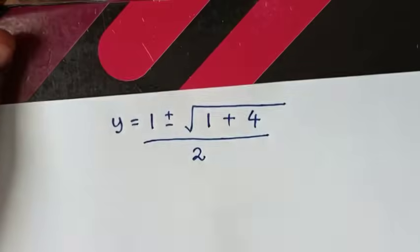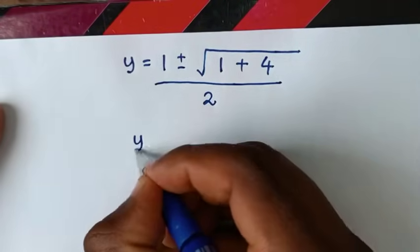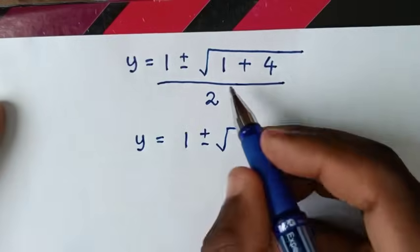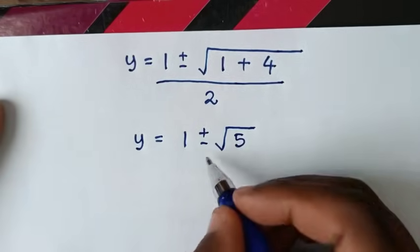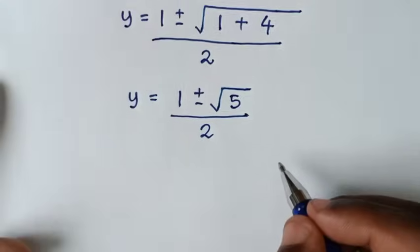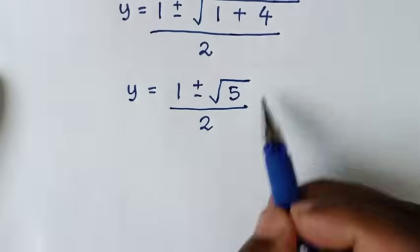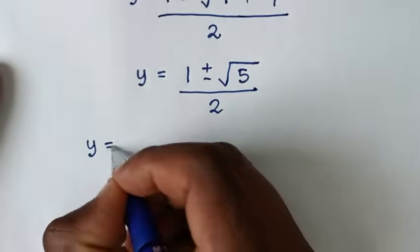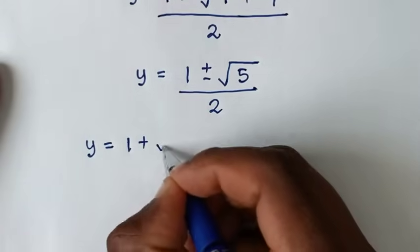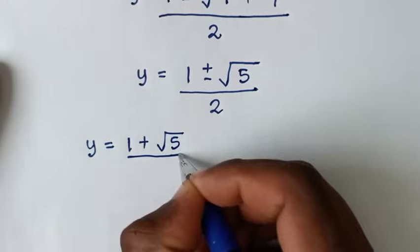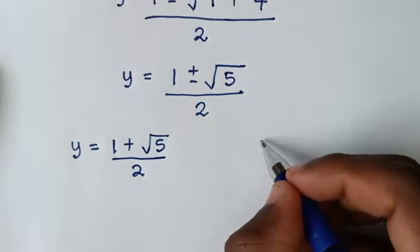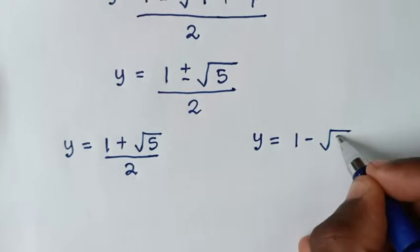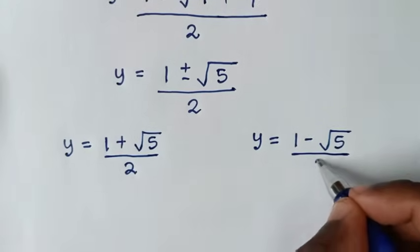In the next step, it will be y equals 1 plus or minus square root of 5, over 2. So we have two solutions: the first value of y is (1 plus √5) over 2, and the second value of y is (1 minus √5) over 2.